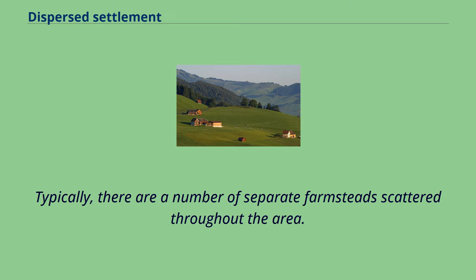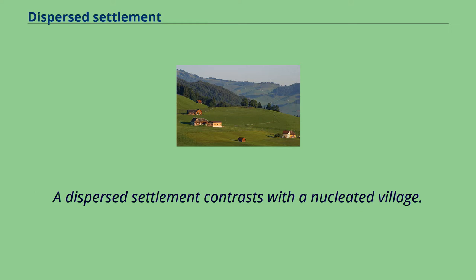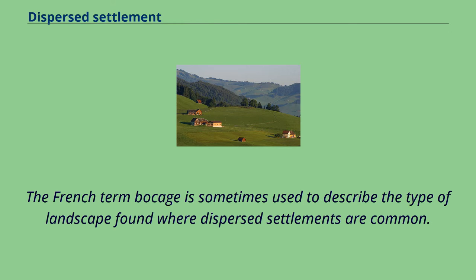Typically, there are a number of separate farmsteads scattered throughout the area. A dispersed settlement contrasts with the nucleated village. The French term bocage is sometimes used to describe the type of landscape found where dispersed settlements are common.